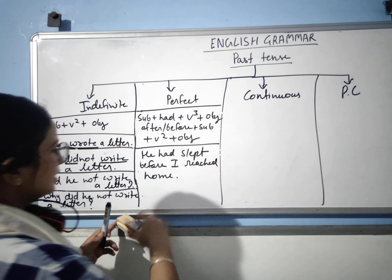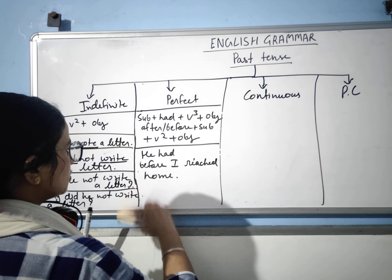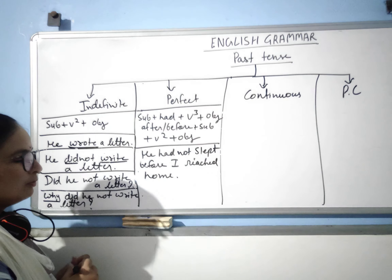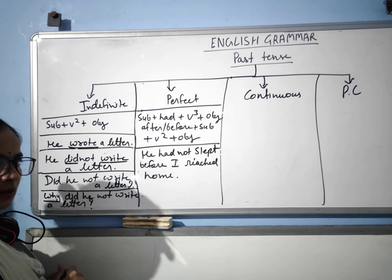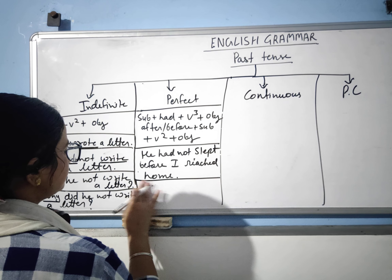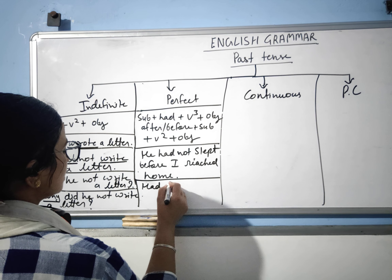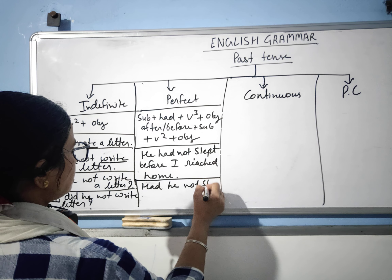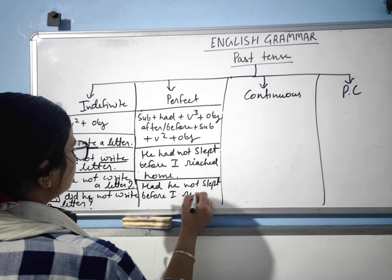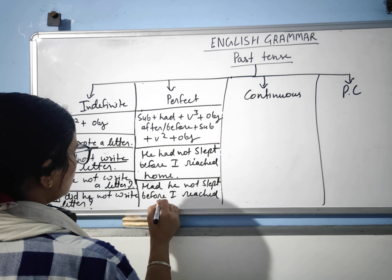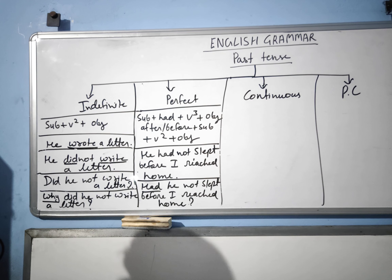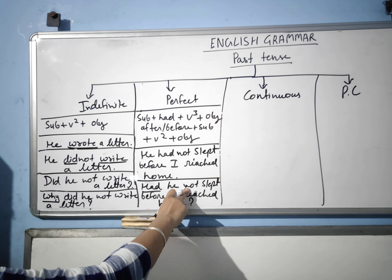In the negative sentence, we will write 'not': 'He had not slapped.' We write 'not' in the first sentence. In the interrogative sentence: 'Had he not slapped before I reached home?' 'Had' comes at the beginning of the sentence, then the subject and 'not' if present.